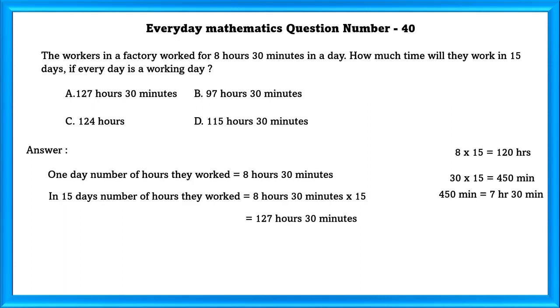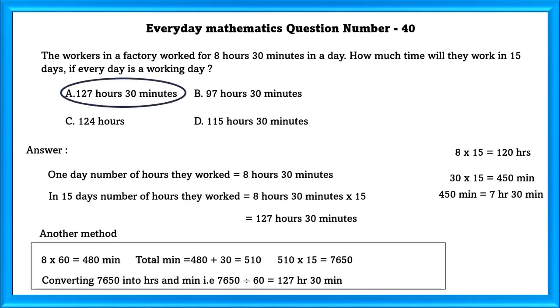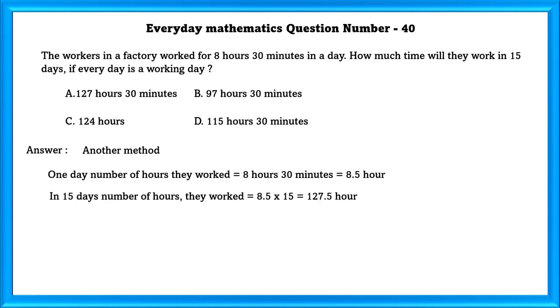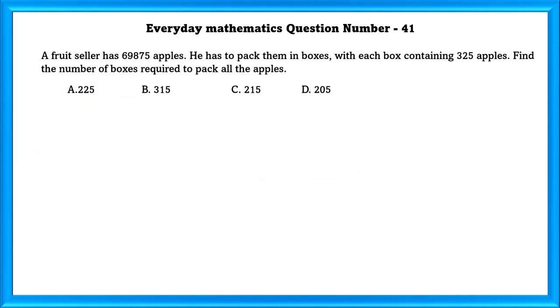Another method is that we can convert hours into minutes and then multiply and then find 127 hours and 30 minutes. Another method is that we can use decimals. So, one day, they worked for 8.5 hours. In 15 days, they worked for 8.5 into 15 which is equal to 127.5 hours. Which is equal to the A option.